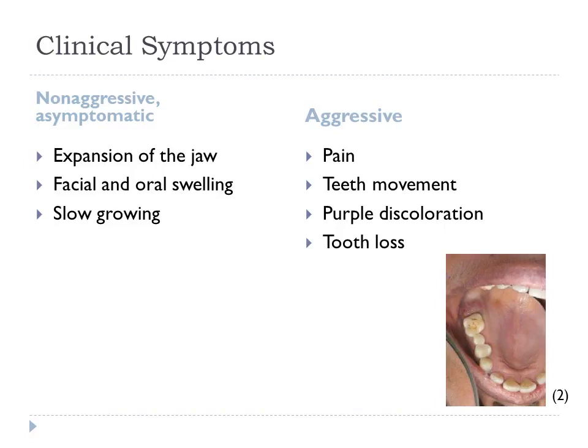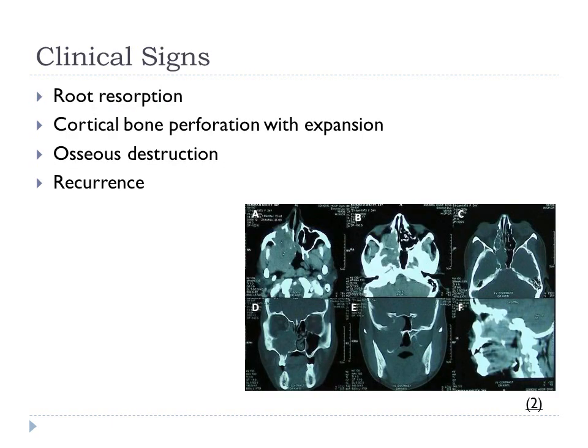Individuals can also be symptomatic with pain, teeth movement, purple discoloration, and tooth loss. The clinical signs include root resorption, cortical bone perforation with expansion, and cortical destruction. Recurrence can be present in individuals who are symptomatic and have an aggressive form of Central Giant Cell Granuloma.